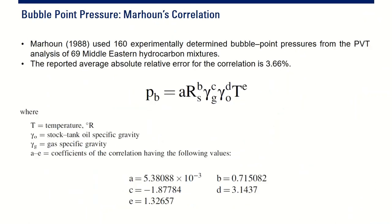Next, Marhun correlation. He used 160 experimentally determined bubble point pressures from the PVT analysis of 69 Middle Eastern hydrocarbon mixtures.